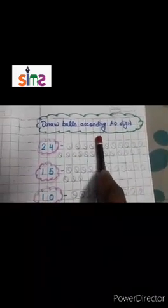So, kids, now you will do this in your math notebook. Draw balls according to digit. Okay, kids. Thank you. Bye-bye.